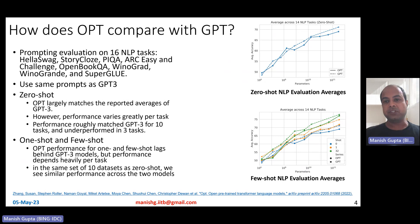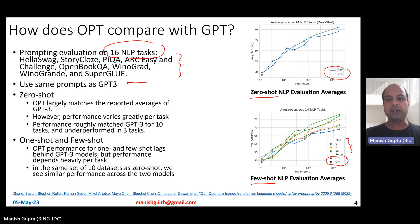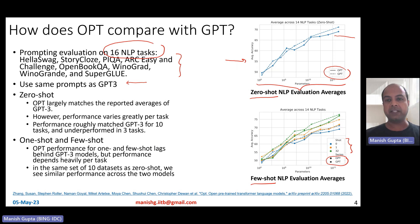How does the OPT model compare with GPT? They perform two kinds of evaluations — zero-shot and few-shot — on 16 different NLP tasks, including popular benchmarks like HellaSwag, StoryCloze, BoolQ, ARC Easy and Challenging, OpenBookQA, Winograd, and SuperGLUE. On zero-shot, OPT largely matches GPT-3 performance across different parameter sizes, though performance varies per task — roughly matching GPT-3 on 10 tasks and underperforming on three.